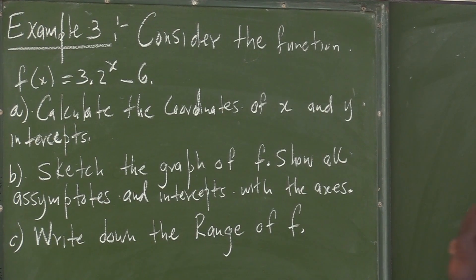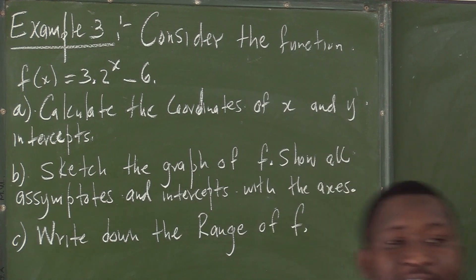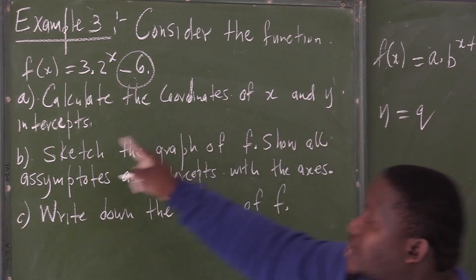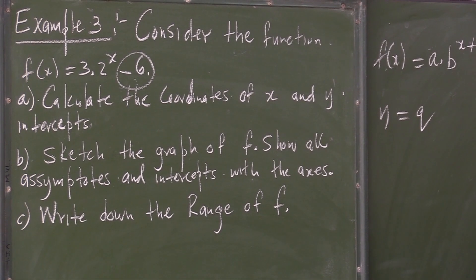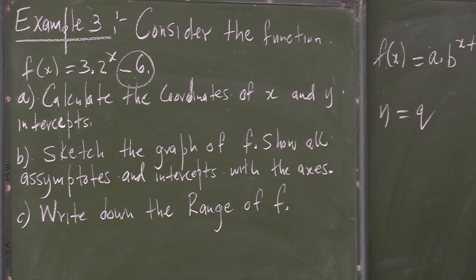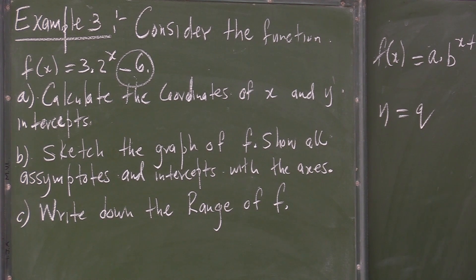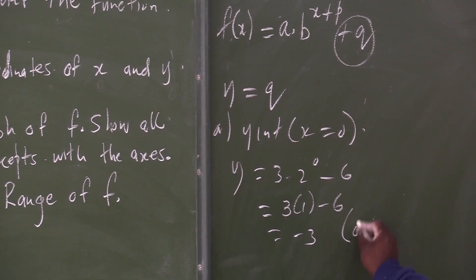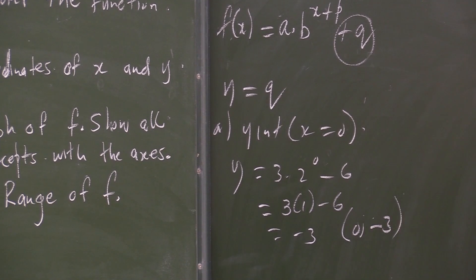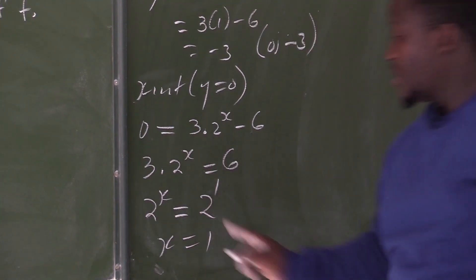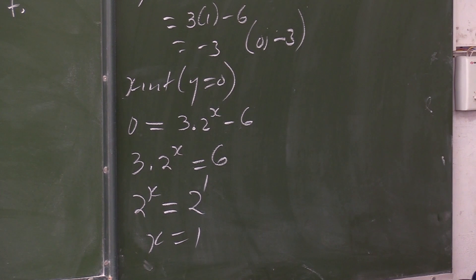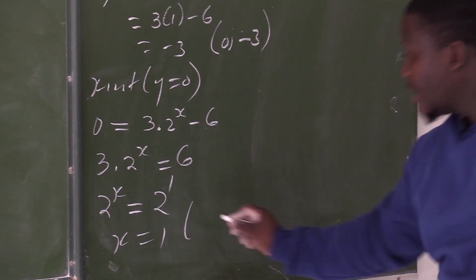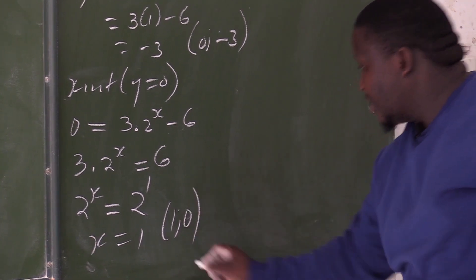Now I want us to look at the exponential curve. The first question here, they are saying calculate the coordinates of the x and y intercepts. How to find the x intercepts? Make y 0. How to find the y intercepts? Make x 0. What are the coordinates of the y intercepts? They are 0 and negative 3. x is 1 because the bases are now the same — you can drop the bases. So, what are the coordinates of the x intercepts? It should read as 1 and 0.